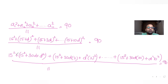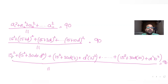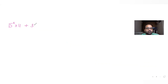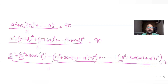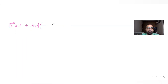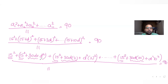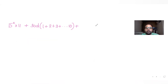Taking common terms: 15² appears 11 times. The 30D terms multiply by (1+2+3+...+10). The D² terms multiply by (1²+2²+...+10²). So the numerator is: 15²·11 + 30D·(sum of 1 to 10) + D²·(sum of squares 1 to 10).